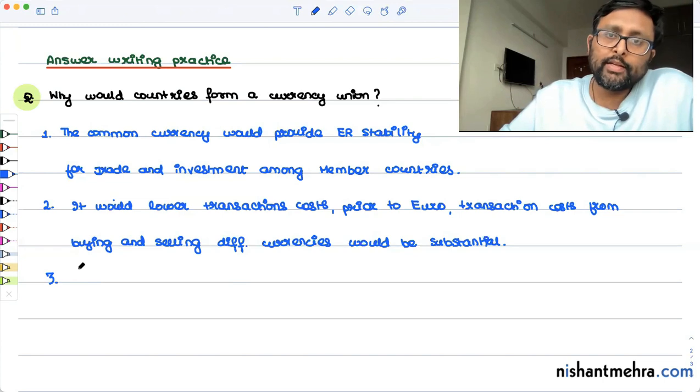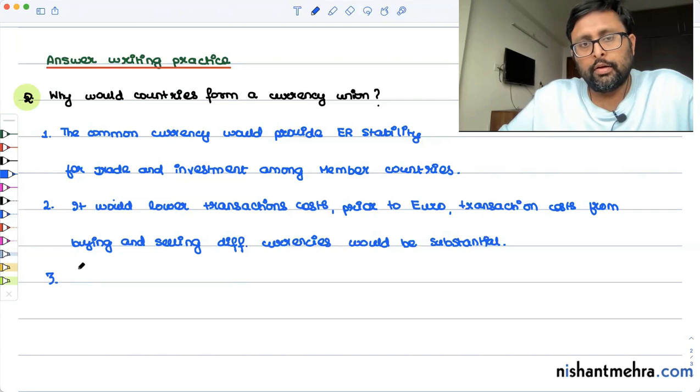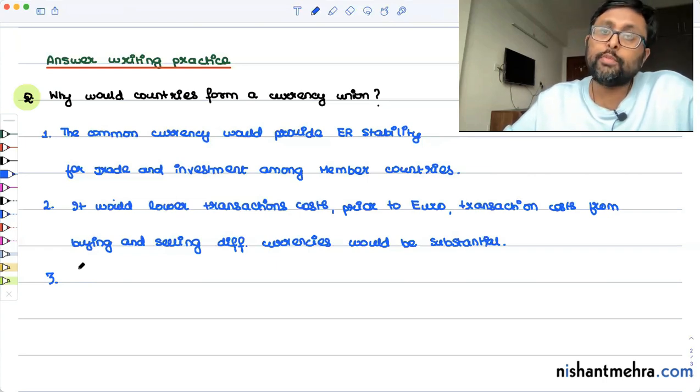sometimes what central banks do is that they actually succumb to political pressure and they pick up the policies which are going to be inflationary. Now, when there is going to be a common currency union, then the central banks are going to give power to the main central bank of the region. So in the case of Euro, let's say European Central Bank.